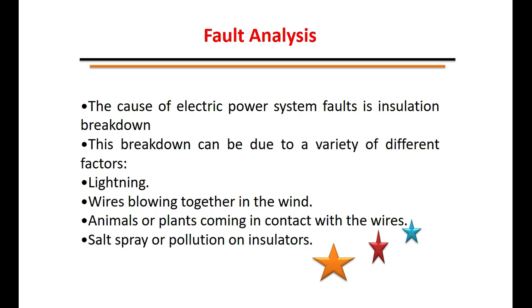The cause of electrical power system faults is insulation breakdown. There are many reasons for insulation failure because of which a fault occurs in the system. This breakdown can be due to a variety of different factors: lightning discharge on overhead transmission lines, wires blowing together in the wind, short-circuits, plants coming in contact with wires accidentally, and salt spray or pollution on insulators.